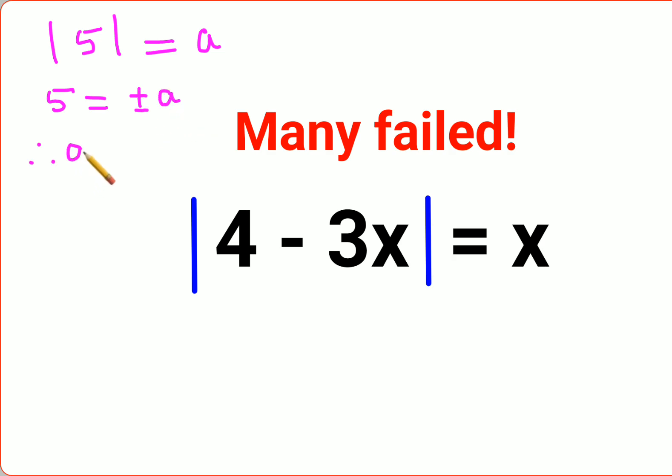Therefore I can say a equals 5, or I can say minus a equals 5. From here I can multiply both sides by minus 1, so I can say either a equals plus 5 or it equals minus 5.